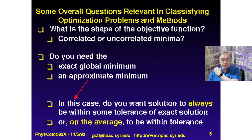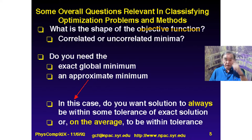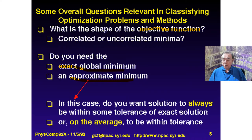We have to ask questions about the shape of the objective function E — it can be different shapes. It can be very smooth, which is easy, or very jagged, which is when you need tempering and is very hard. You have to ask whether local minima are correlated with the global minimum — whether each global minimum has lots of associated local minima nearby. And we need to know whether we need an exact global minimum or an approximate minimum, and whether we want to minimize the worst case or the average deviation. Minimizing the average is typically easier than minimizing the worst case.